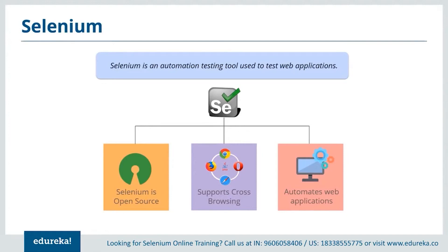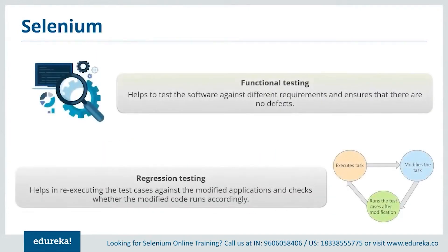Selenium is free of cost — the user does not have to pay for any of its versions. The latest version available is Selenium 3.1. For end-to-end guidance on how to set up Selenium, refer to the link in the description. Selenium is highly flexible when it comes to functional and regression testing. Functional testing helps test the software against business requirements and ensures no defects, while regression testing helps re-execute tests against a modified application.